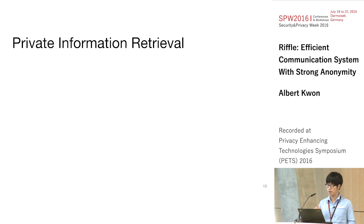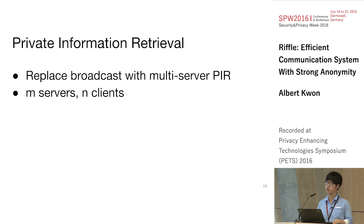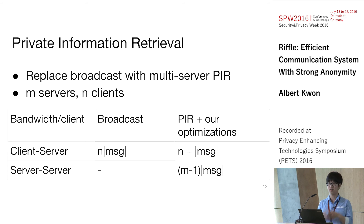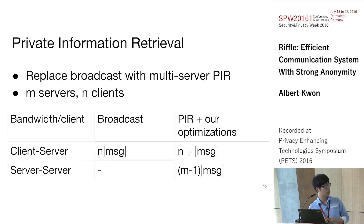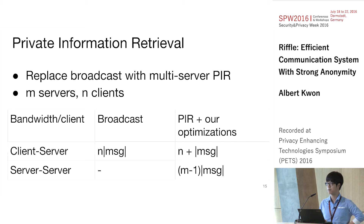To improve broadcast bandwidth, we replace broadcast with multi-server PIR. With M servers and N clients, between each client and server we reduce N messages to just one message plus N bits — so even for a million clients it's essentially one bit per client. This does introduce M minus one inter-server messages per round, but the total bandwidth is still much less than N messages, and server-to-server bandwidth in practice is cheaper than client-server bandwidth.